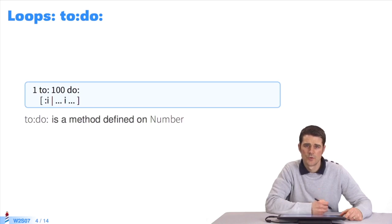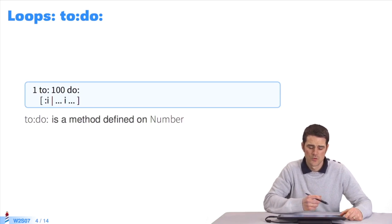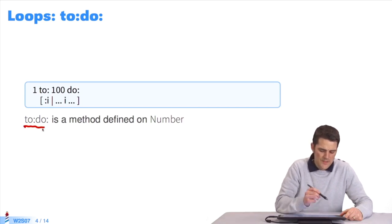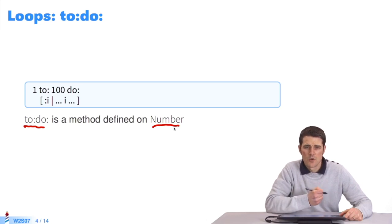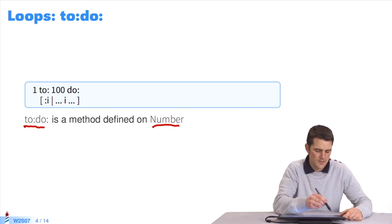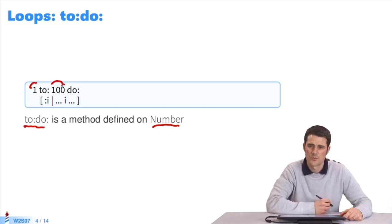There are other types of messages to create loops. In this example, it's the message to do. The message to do is defined on the class number. I'll also pass it a block as a parameter, the last argument of the message. This block gets executed a number of times with a loop cursor that goes from the receiver to the first argument of the message.